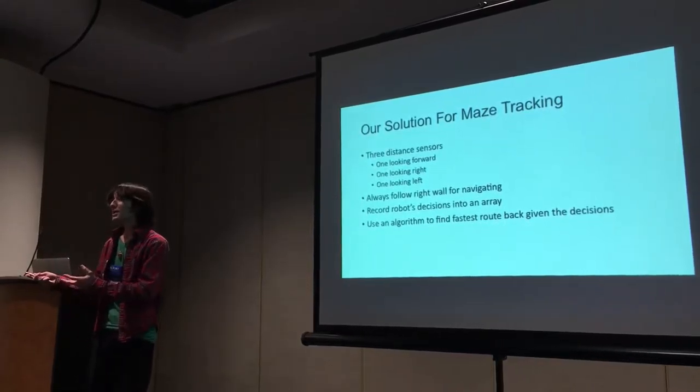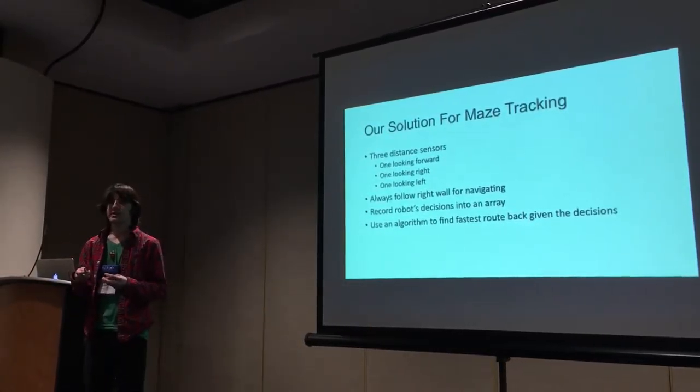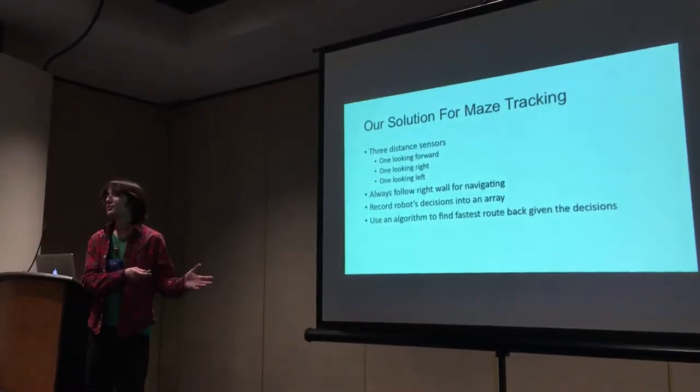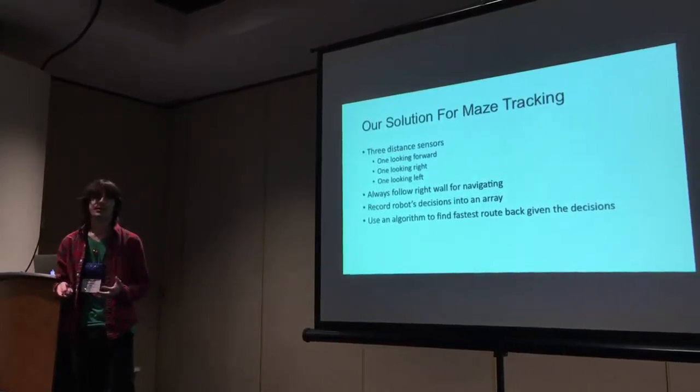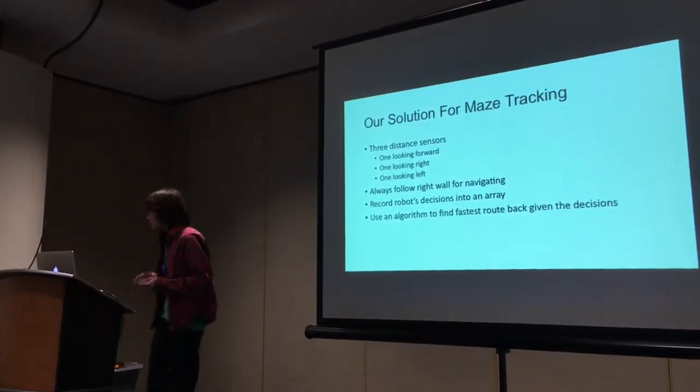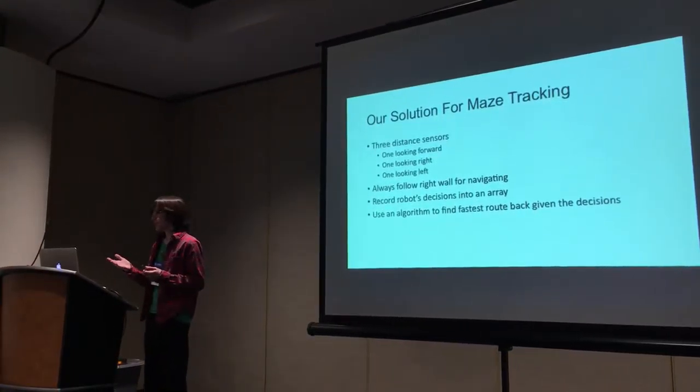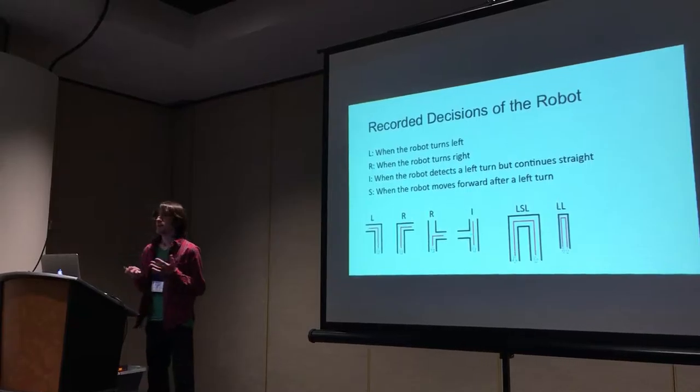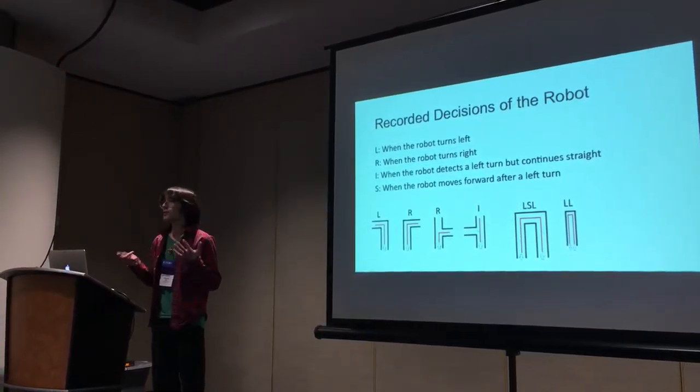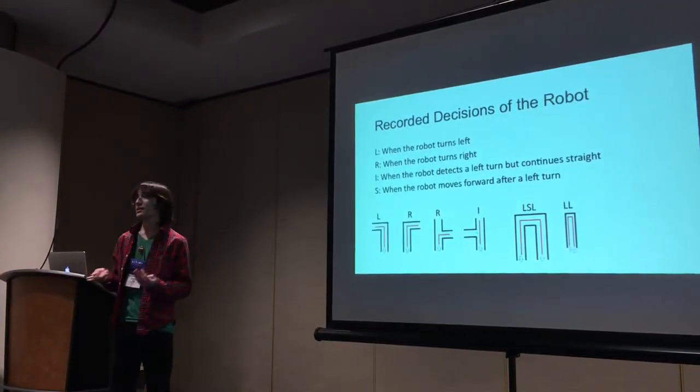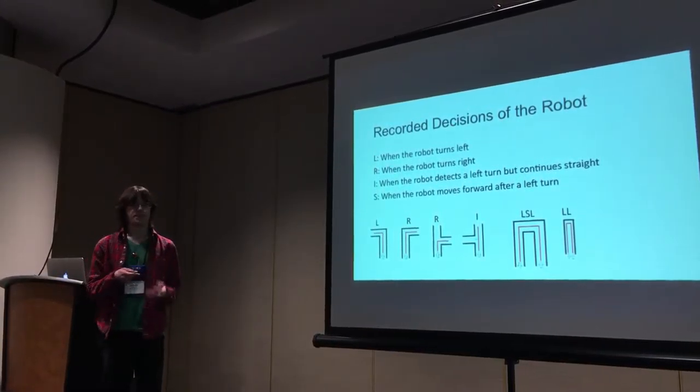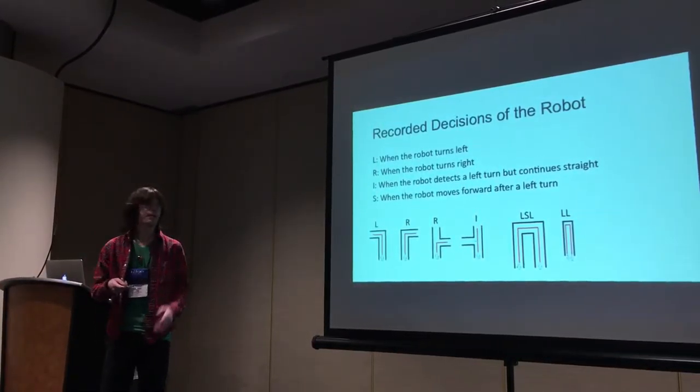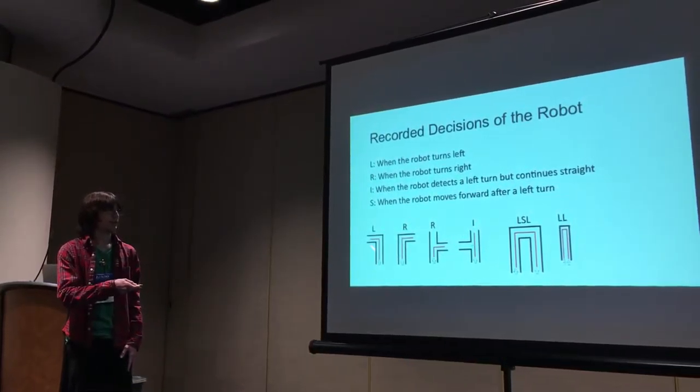Once we get to the object, we put all those decisions from the array into the algorithm, which gives us the fastest way out of the maze. Unfortunately, due to PC to Mac issues, I can't show the video of the robot. What does the robot actually record? It records four different things. It records an L when the robot turns left, as seen in this example. It records an R when the robot turns right, as seen in these next two examples.